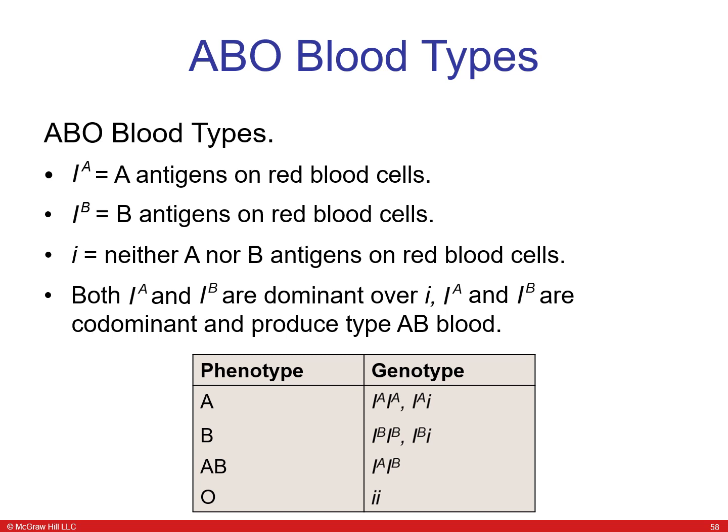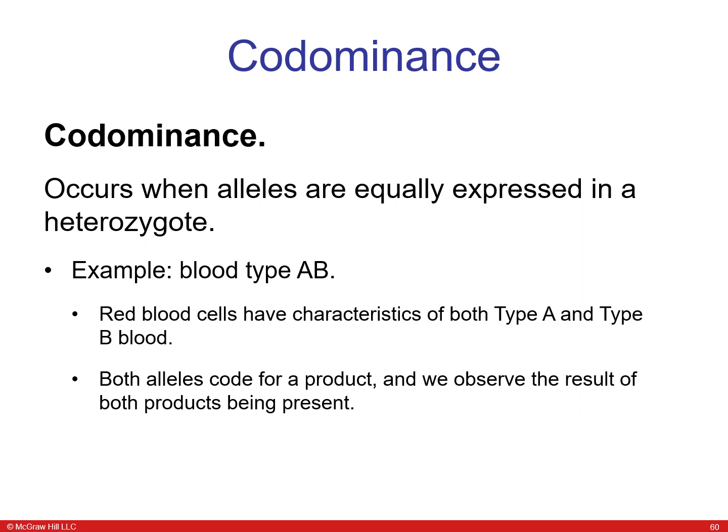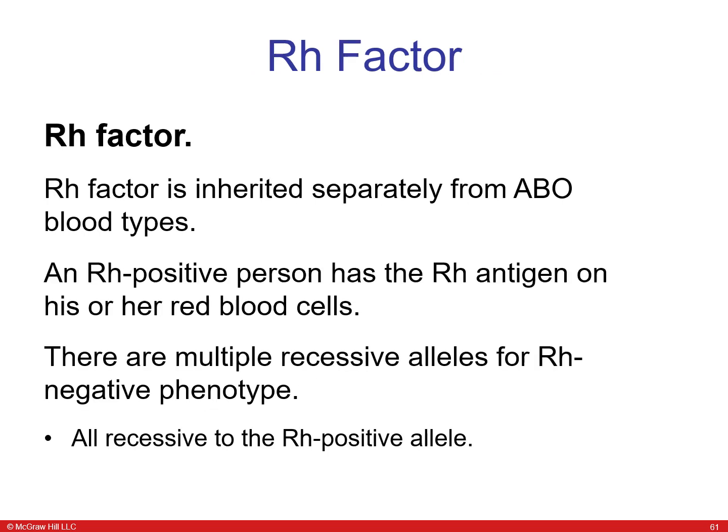Many traits are controlled by multiple alleles, such as the ABO blood groups in humans. Blood cells can have A antigens, B antigens, or neither — blood type O. Both A and B are dominant over O, but A and B are codominant and can produce type AB blood. Codominance occurs when alleles are equally expressed in the heterozygote — for example, type AB individuals have both A and B proteins on their red blood cell surface. Rh factor is inherited separately from ABO blood types; Rh positive individuals have the Rh protein on their red blood cells.